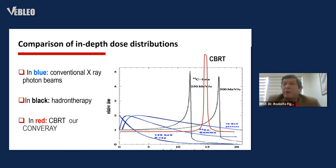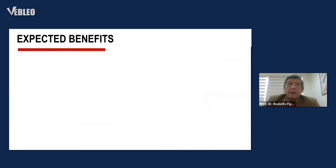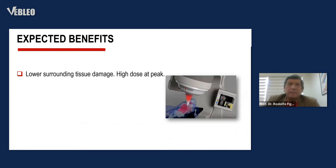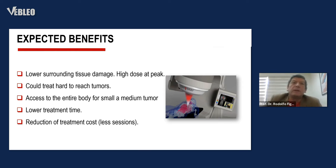Here we have a comparison of dose distribution with different equipment and external radiotherapy techniques. In blue: conventional X-ray photon beam. In black: hadron therapy. In red: CBRT — our Conver-ray. Effective benefits include lower surrounding tissue damage, high dosage at the peak, ability to treat hard-to-reach tumors across the entire body for small and medium tumors, lower treatment time, and reduction in treatment costs.